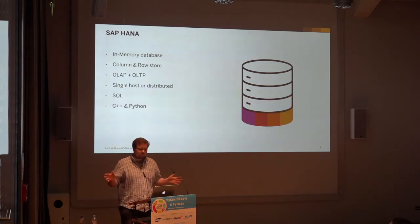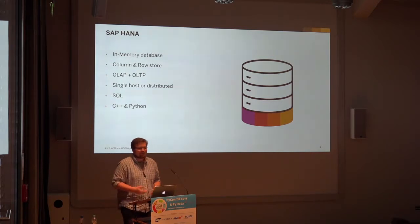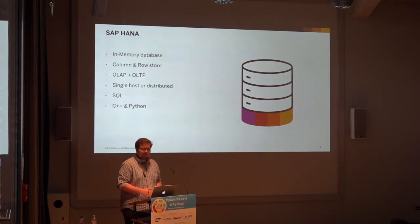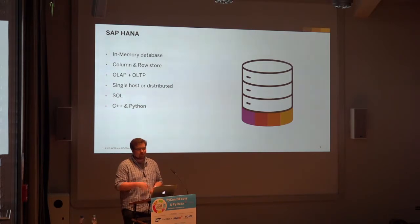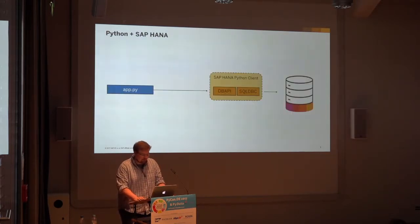On the other side, you can also scale out into different directions using multiple hosts to power your database. For us as developers it doesn't matter, because we can just use it as one single database. We write SQL or use other tools. As Python developers, it's interesting to see that HANA itself ships a lot of Python code — many system management tools are written in Python because it's much faster to implement. The database core is written in C++ for performance reasons. Let's take a look at how this bridges to Python.